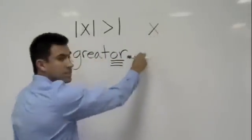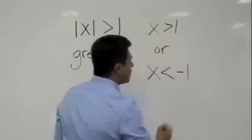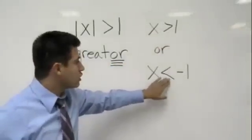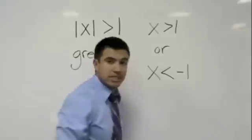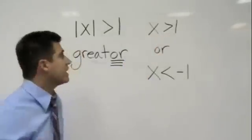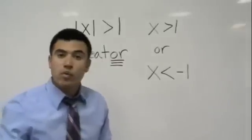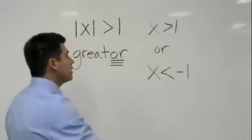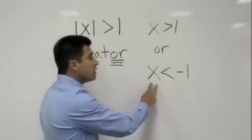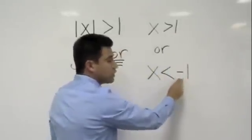We set it up into two inequalities: x is greater than 1 or x is less than negative 1. You always set it up into two inequalities. For the first one, you keep it exactly the same — just remove the absolute value. For the other one, you take out the absolute value, switch the sign, and make the number the opposite. So x is less than negative 1 or x is greater than 1.